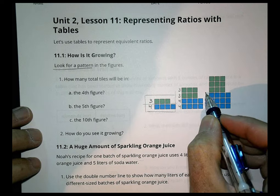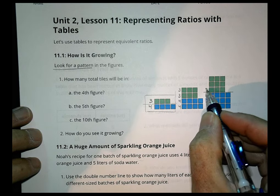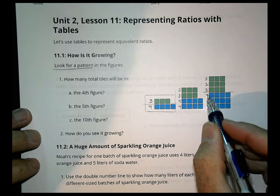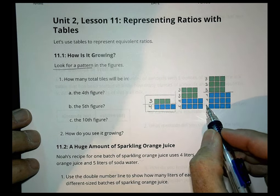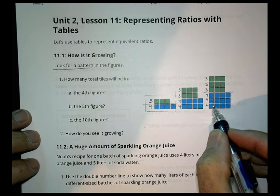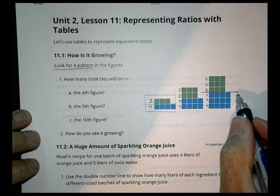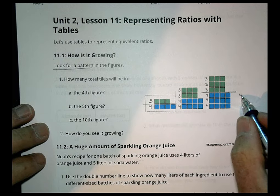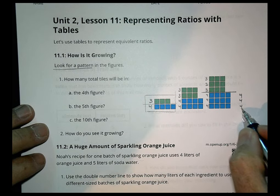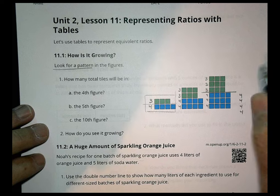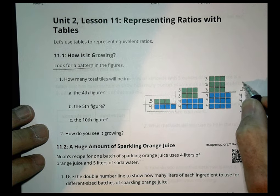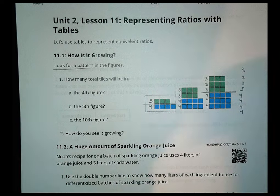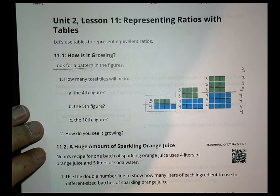Let's see if that pattern holds true. Here I have a row of three, and I added another row of three. Here's my row of four, and I added another row of four. So we can imagine that if this was to continue into the next figure, I would end up with four rows of four and four rows of three, and that would continue on for however many figures we decided to do.